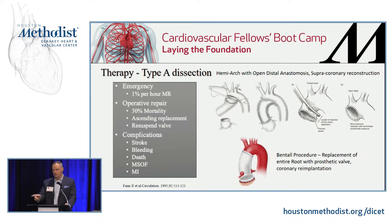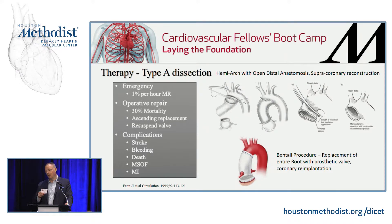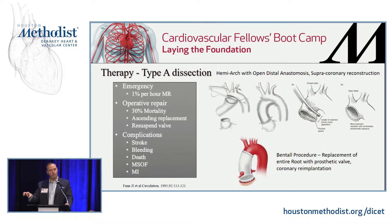Most of the time you can reconstruct the aortic root with felt if the dissection doesn't involve the valve. That's why preoperative echo is so important — to assess for aortic insufficiency. If AI is present and the valve is involved, sometimes you can repair and resuspend it with felt in the sinuses. If not, you replace the valve and do a Bentall procedure: a mechanical or pericardial prosthetic valve sewn into a graft, sewn down to the annulus with re-implantation of the right and left coronaries.